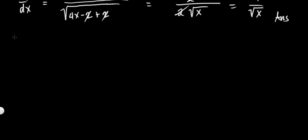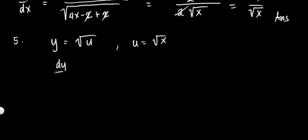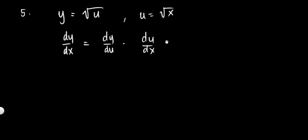Number 5, the last example on the chain rule. We have y equals the square root of u, and u is equal to the square root of x. From dy over dx equal to dy over du multiplied by du over dx. Find dy over dx.